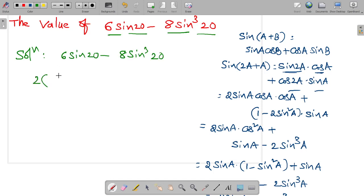So, take two as common. 3 sine 20 minus 4 sine cube 20. So, it seems to be like 3 sine A minus 4 sine cube A.